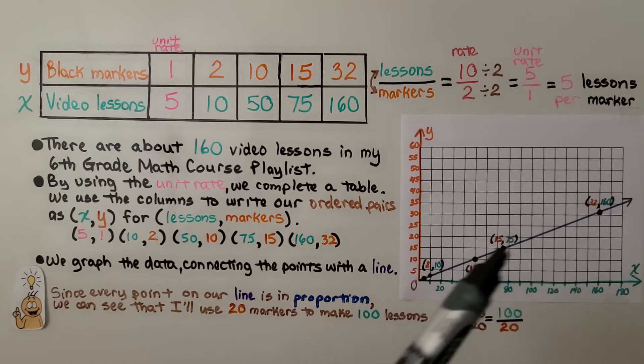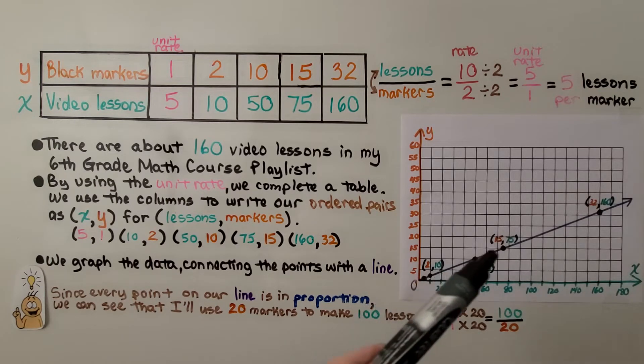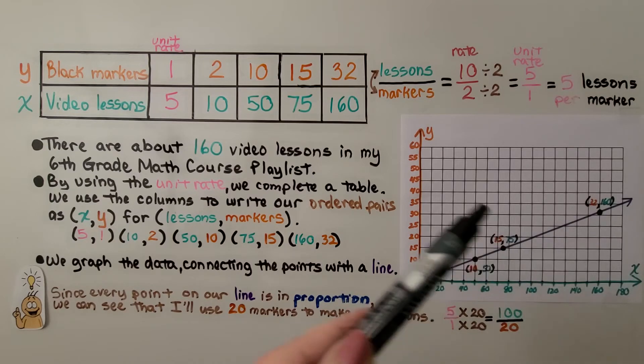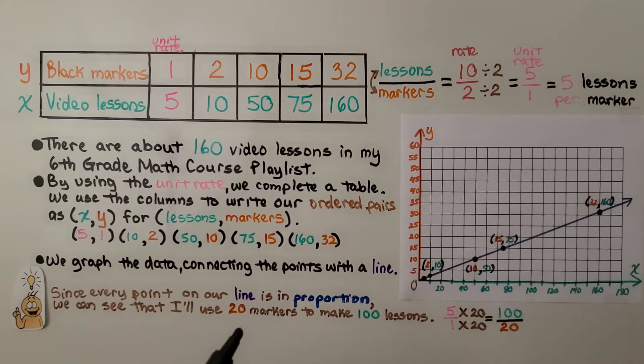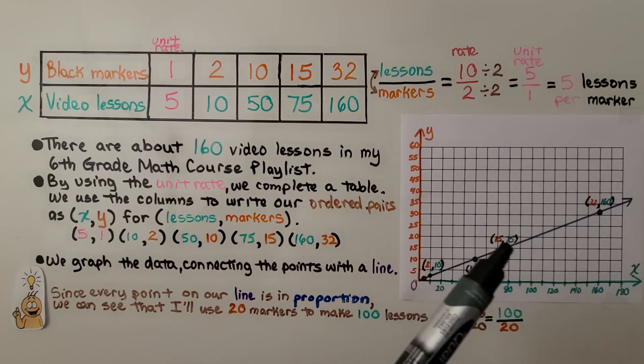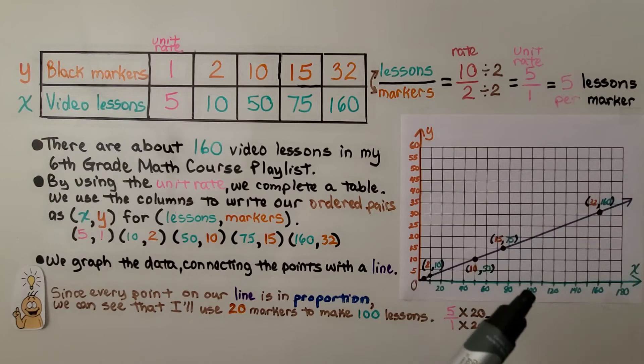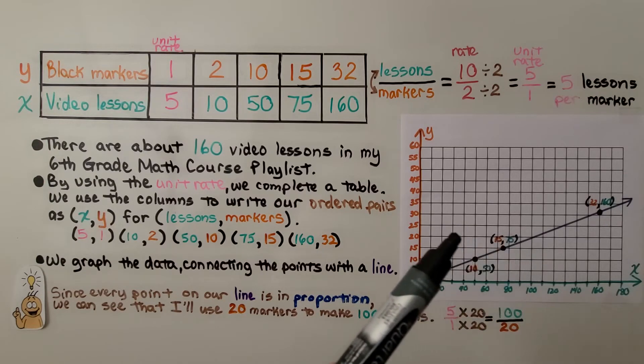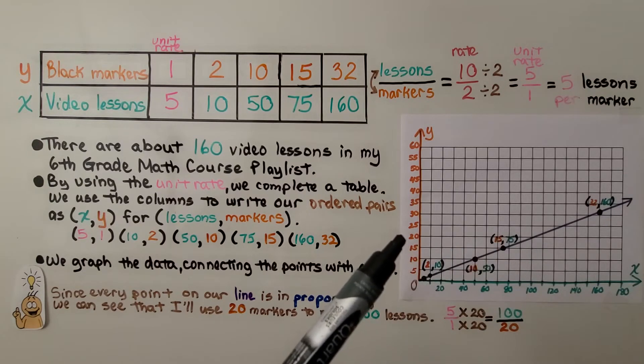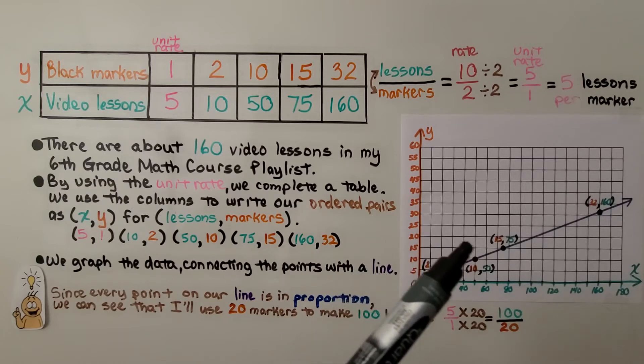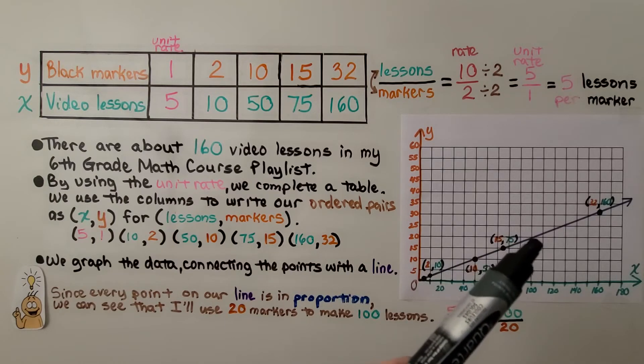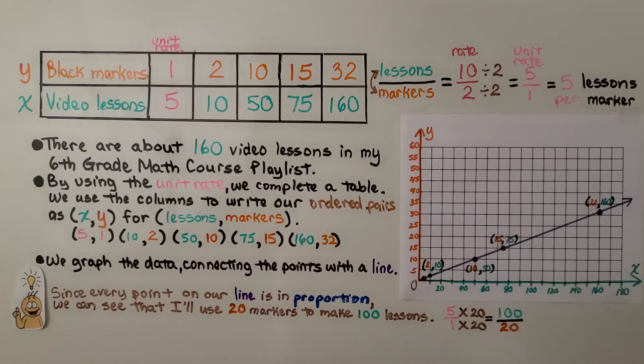Connecting the points with a line. Since every point on our line is in proportion, they're all in proportion with each other. We can see that I'll use 20 markers if I make 100 lessons. We look at 100, we see where it matches the scale of the Y axis, and it does at 20. We could put another point right there, and know that I'll use 20 markers to make 100 lessons.